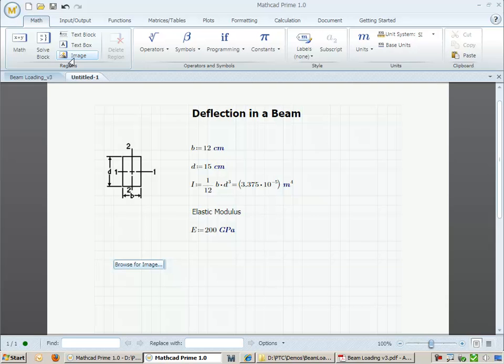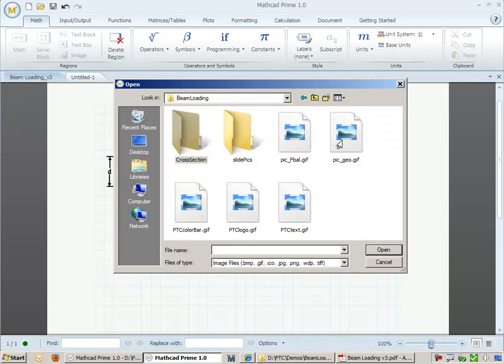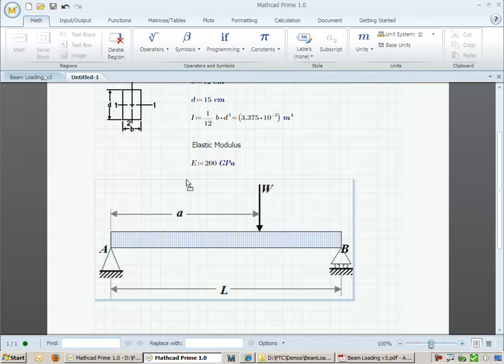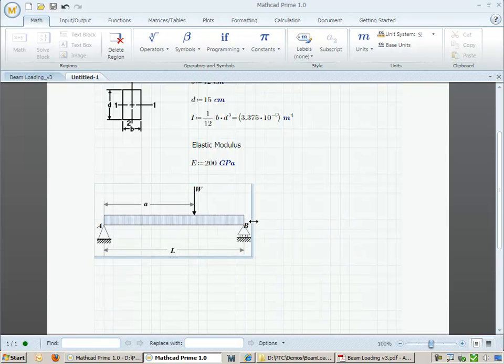We can put in another image to show how the beam is being supported and also where the load is being applied. We will specify a load of 500 N, have a beam of 15 meters, and have that load be applied at 11 meters from the left-hand side.